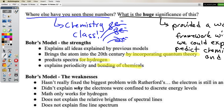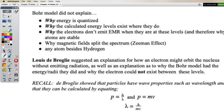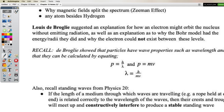Bohr's model also doesn't explain why some spectral lines are brighter than others. You may have noticed when viewing the hydrogen emission spectrum that some lines were very bright and vibrant whereas others were weaker and less intense. It also doesn't explain the fine line structure of the spectrum — under a magnetic field or when zoomed in, even a single spectral line can have little sidelines made up of smaller divisions of wavelengths.